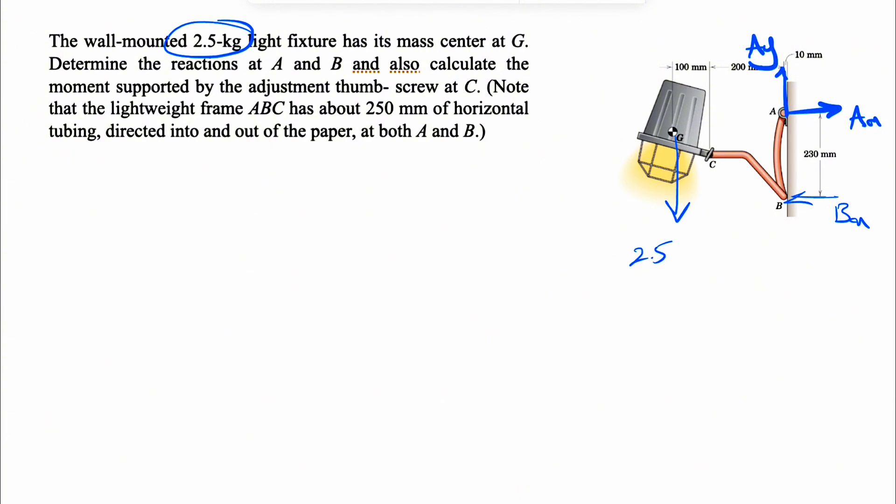The mass is 2.5 kg. If we want to find the weight, we're going to multiply mass by acceleration of gravity, which is 9.81 meters per second squared. So 2.5 times 9.81, and this is going to give us the force in Newtons.